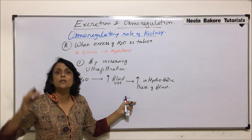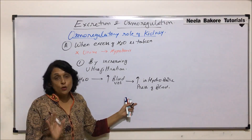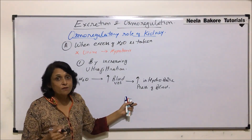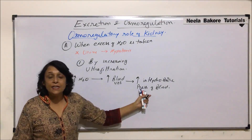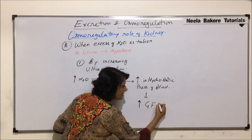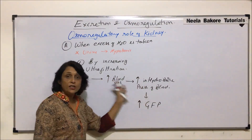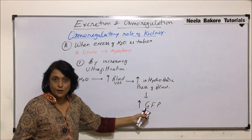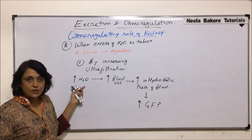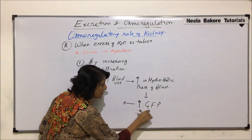If the hydrostatic pressure goes up to say 70 or 80 mmHg, the resistance pressure remains the same at 50 mmHg. So while 60 minus 50 gave us normal filtration pressure of 10 mmHg, if it becomes 80 minus 50, the glomerular filtration pressure increases depending on how much extra water was taken in and how much the hydrostatic pressure has risen.